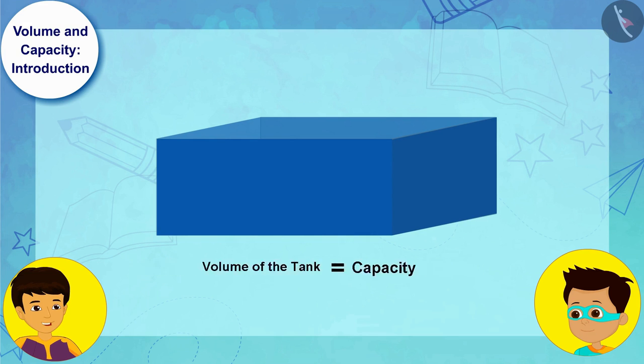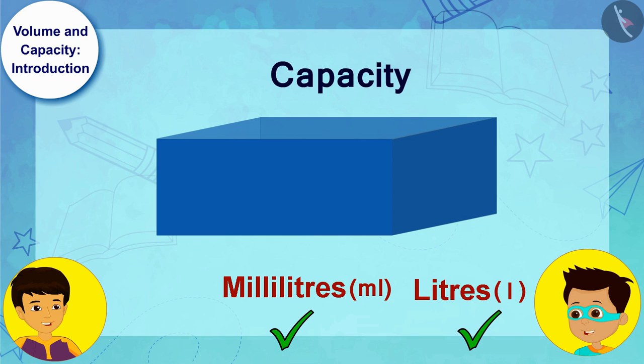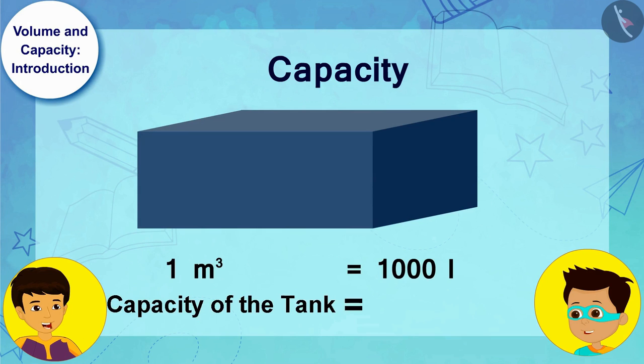Oh, now I understood! 1 cubic meter is equal to 1000 liters. Therefore, the capacity of this tank will be 1000 liters.